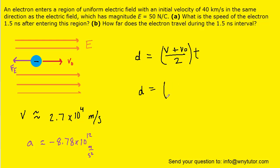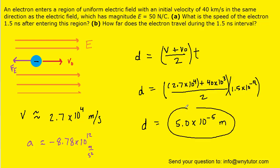So, we'll go ahead and plug in the final velocity, the initial, and then the time. We've omitted the units just for the sake of clarity. And when we calculate this distance, we should get roughly 5.0 times 10 to the minus 5, and then that'll be in meters. So, this is the correct answer to part B.